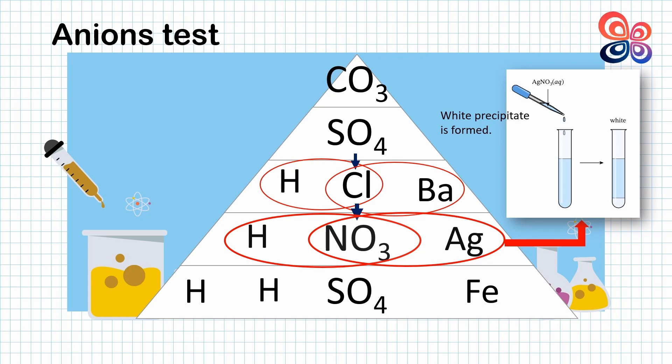How does this happen? Silver ion from silver nitrate combines with chloride ion to form silver chloride. Silver chloride is an insoluble salt that forms white precipitate. The nitric acid added is to prevent the formation of silver carbonate and silver sulfate.